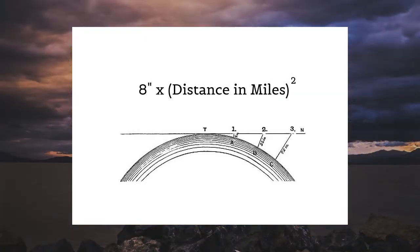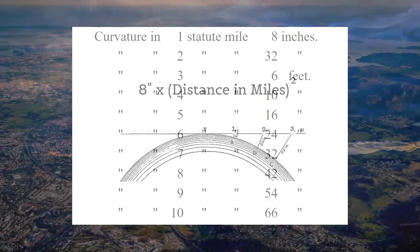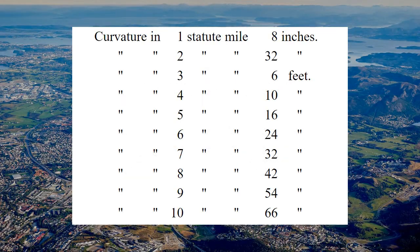The commonly used formula for surface decline is 8 inches times the distance in miles squared. Over 10 miles, the chart looks like this.